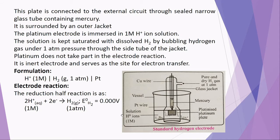The platinized platinum plate is connected to the external circuit through a sealed narrow glass tube containing mercury. It is surrounded by an outer glass jacket.